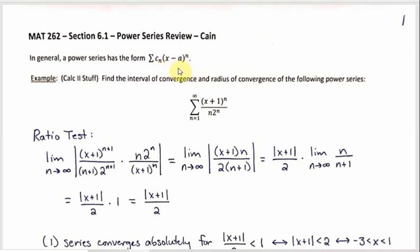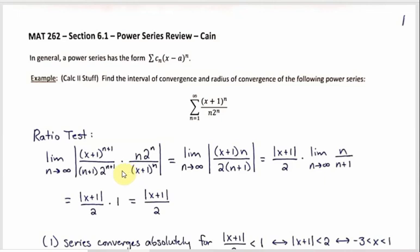So generally that's what a power series looks like. Here we've got one where c sub n is one over n times two to the n. What we're supposed to do is find the interval and radius of convergence. With a power series, if you're going to try to find the interval of convergence, the best thing to do is a ratio test, so that's what I did here — with the n plus one and then divided by the same thing with n as the index, except that I multiplied by the reciprocal.